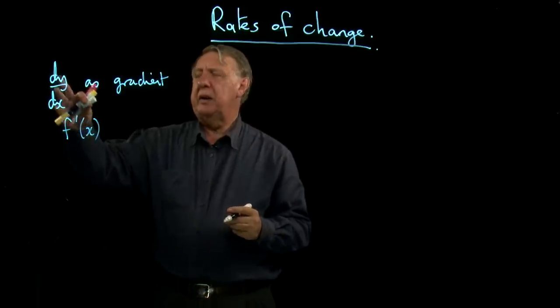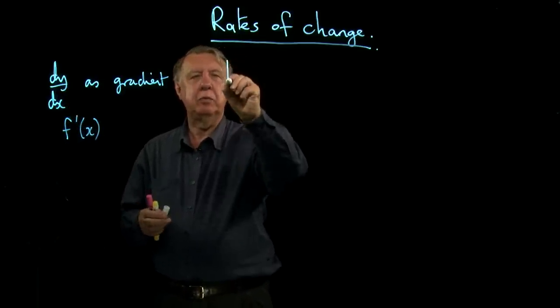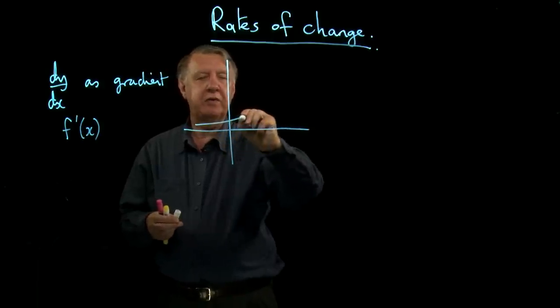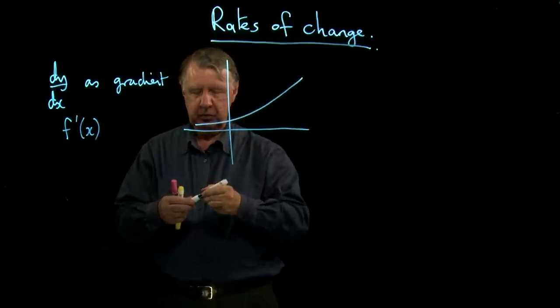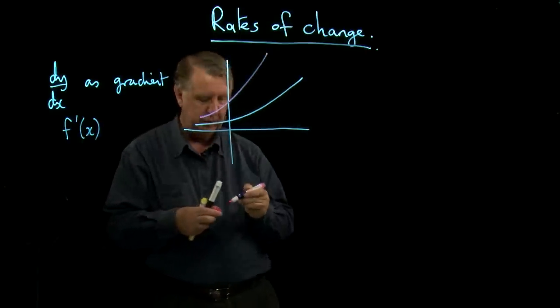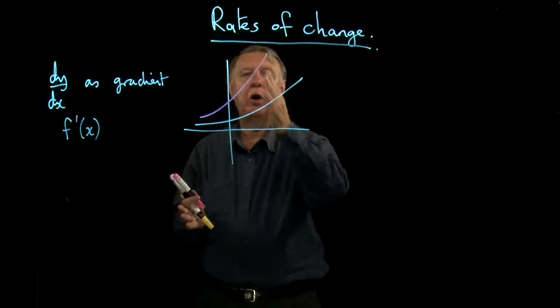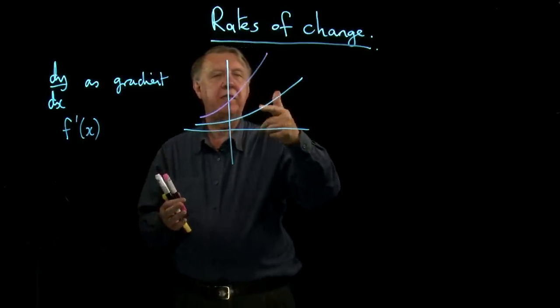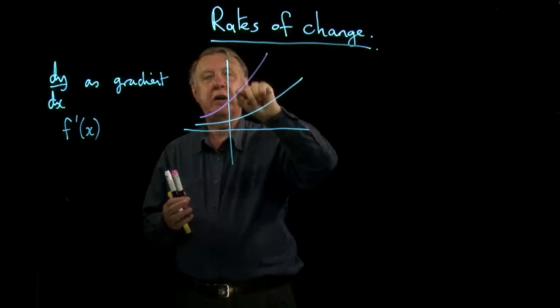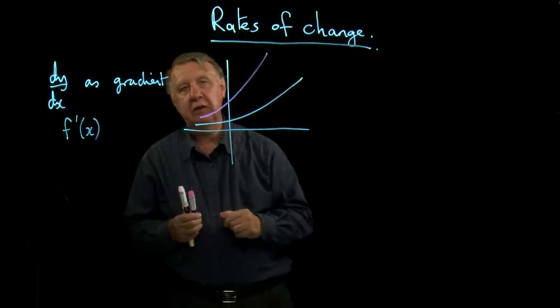But in effect, what is gradient measuring? Clearly the gradients along this graph are lower than the gradients on that graph. And so in terms of y, the y values on the pink curve are increasing much quicker than the y values on that curve.